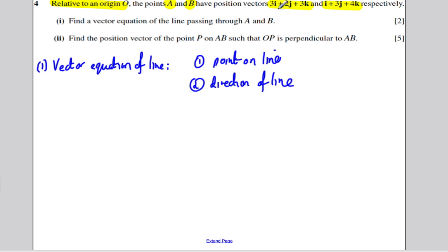Now both these points are on the line passing through A and B, so you can choose either of them for your point on the line. And then you need a direction of the line.